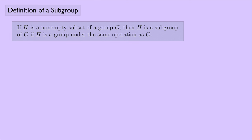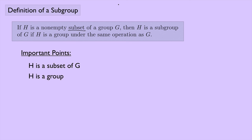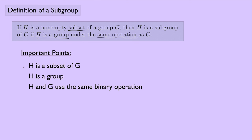I want to introduce the concept of a subgroup. If H is a non-empty subset of a group G, then H is a subgroup of G if H is a group under the same operation as G. There are three important points here: first, H is a subset of G; second, H itself is a group; and third, H and G have to use the same binary operation. If we have these three things, then we can say that H is a subgroup.